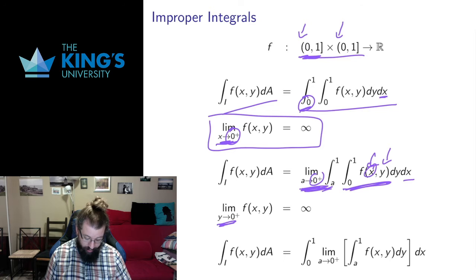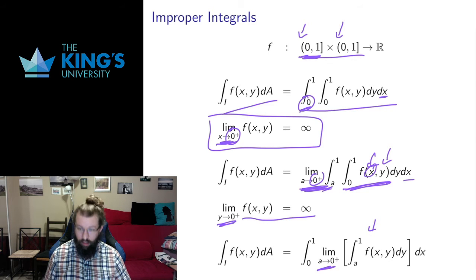If the problem was with y, if the function diverged as y approached 0, then since y is the inside integral, I would in fact have that limit inside here. I would change the bound in y from 0 to a and take the limit as we approach 0 from the positive side. So this limit can show up in the outside integral or on the inside integral, whatever the case is.